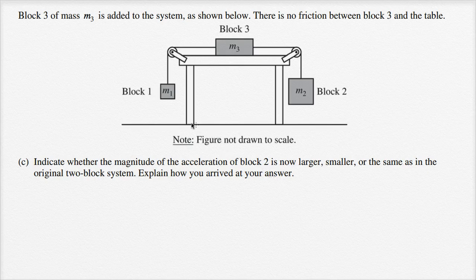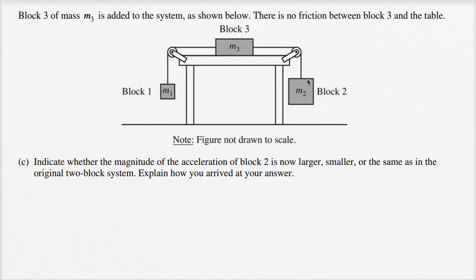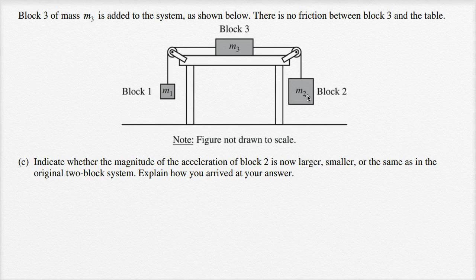Let's think about the intuition here. If you think about the net forces on the system itself, they're the same as we had before. Now the internal forces are going to be different — you're actually going to have two different tensions now that you have two different strings. But the net forces causing this thing to accelerate upward on the left-hand side, to the right on top, and downwards on the right-hand side — it's still the difference in the weights between the two blocks. But now that difference in weights is moving more mass.